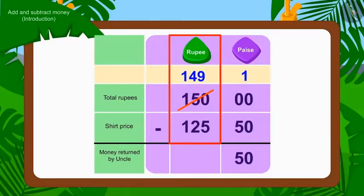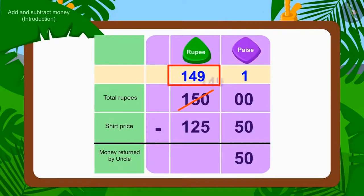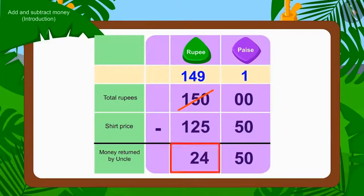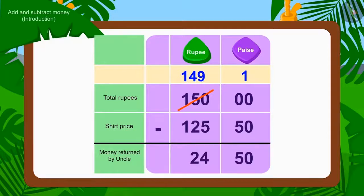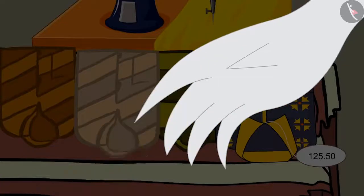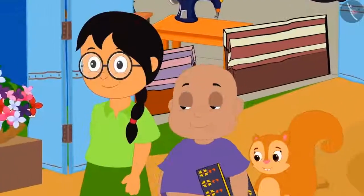Now, we will subtract the number of rupees: Rs. 149 minus Rs. 125 equals Rs. 24. In this way, Uncle will have to return them Rs. 24.50 paise. The uncle returned them Rs. 24.50 paise.